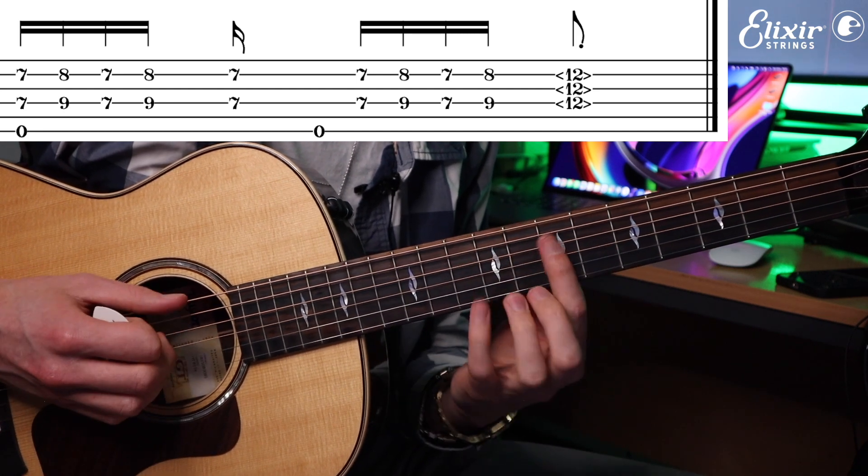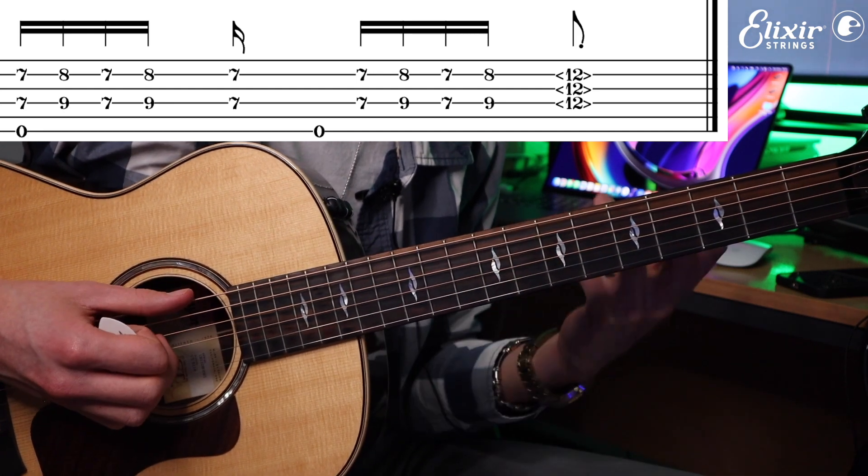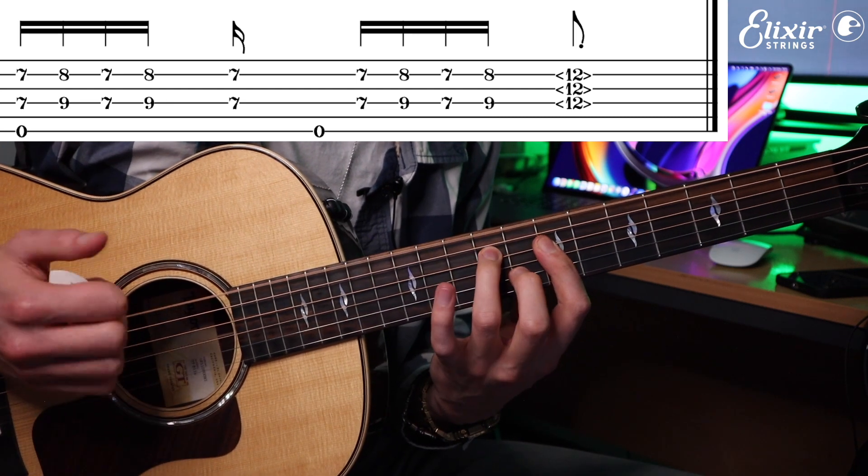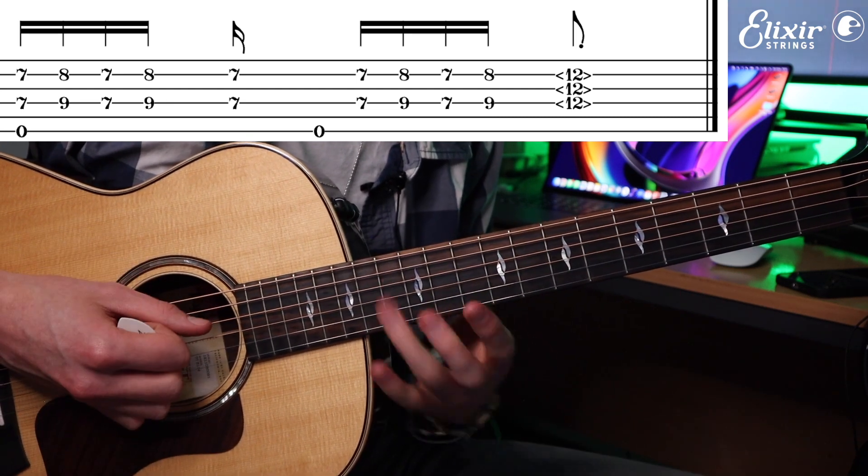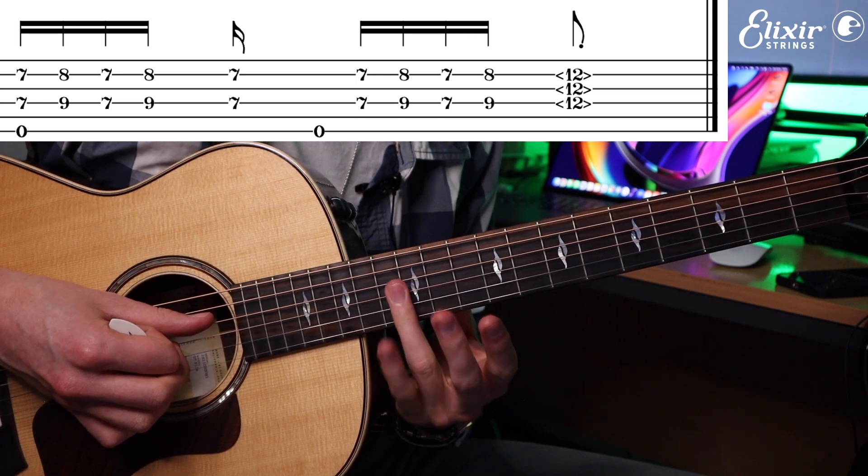So we have a backbeat after that and then just the seventh fret again. And then we repeat this little pattern. Then after the backbeat we just do a 12th fret harmonic on the D, G, and B strings.